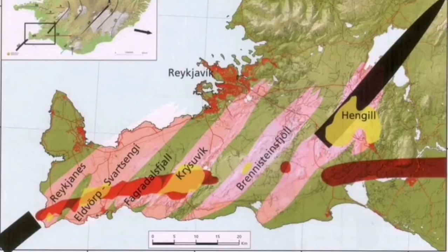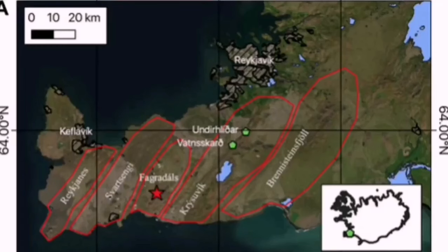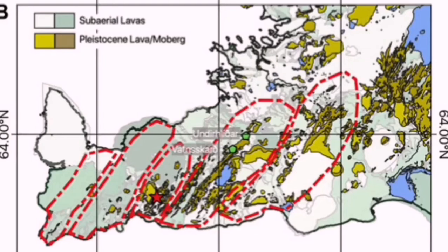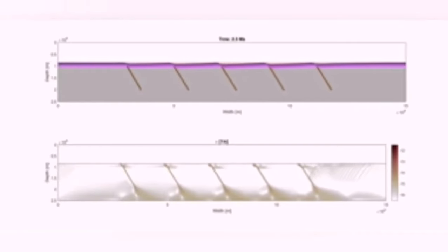They are technically similar to the Riedel shear structures that we see in the rocks. Extension creates fault lines, and through them the lava may erupt. We see them in micro scale in the rocks.